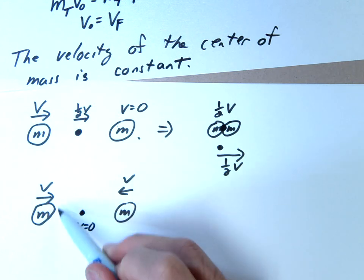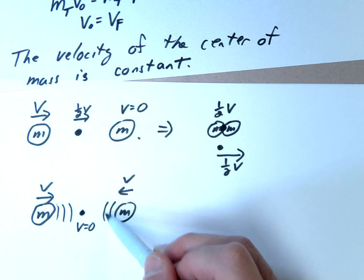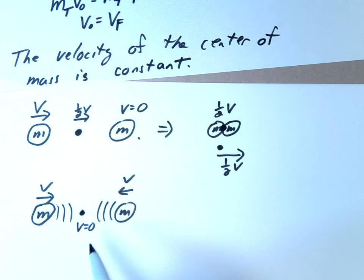It would just be standing still. And as this one moves closer, this one also moves closer at the same rate. And so this center of mass would be zero the whole time.